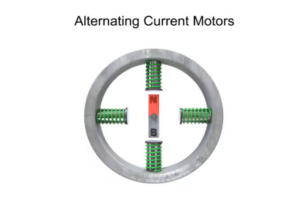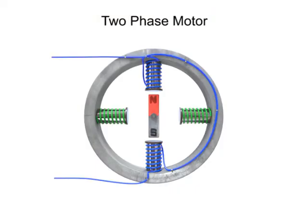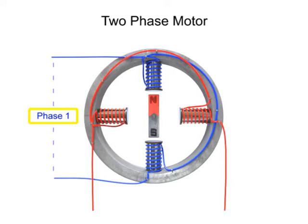This illustration of a two-phase motor has a pair of stators connected to one sinusoidal AC input, referred to as phase 1, and a pair of stators connected to a second sinusoidal AC input, referred to as phase 2.